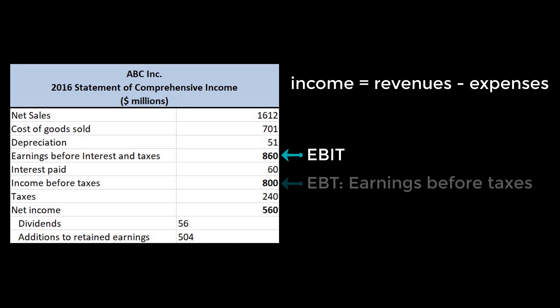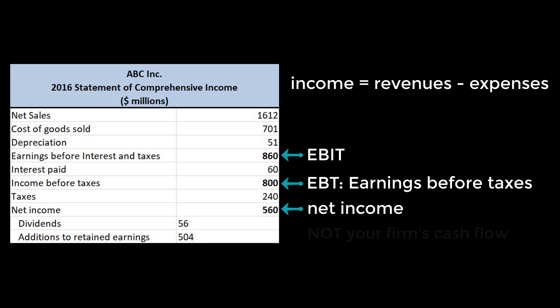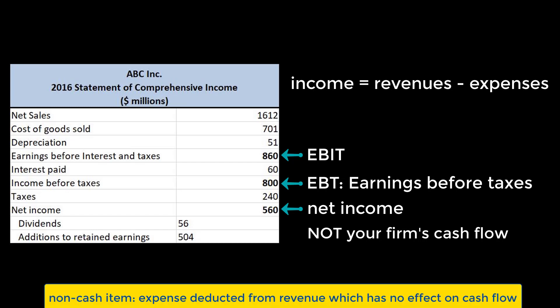From EBIT, you deduct interest, then taxes, and finally you arrive at net income. This is the total amount of money once all the costs of running your business have been accounted for, but this isn't your firm's cash flow. That's because getting to net income requires the deduction of non-cash items, which are deducted from revenues on statements but don't have an impact on the actual cash flow of the firm. Depreciation is one such item.